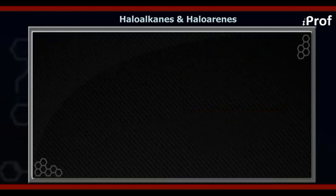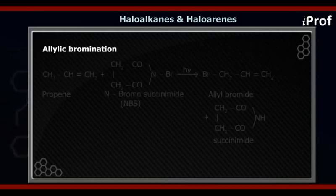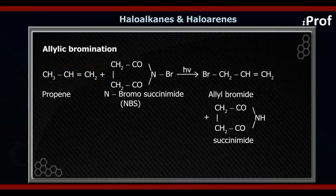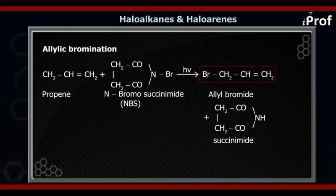The next method for allylic substitution — but mind you, this is only for bromine, not for chlorine. Suppose again we have the same alkene, CH₃–CH=CH₂, and you add NBS, which is known as N-bromosuccinimide. The Br in the N-bromosuccinimide will replace the hydrogen in the alkene at the allylic position, so the product formed will be CH₂Br–CH=CH₂.